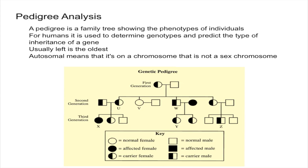Autosomal means that the gene is located on a chromosome other than a sex chromosome — in humans, this means it's not on an X chromosome or a Y chromosome. The other type is sex-linked, which means the trait is on the X or Y chromosome. Generally, sex-linked traits are going to be on the X chromosome, just because it's a lot bigger than the Y and has a lot more genes.